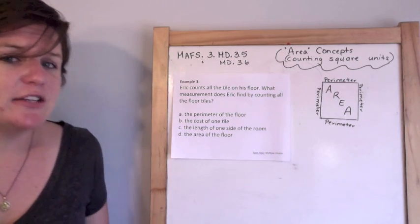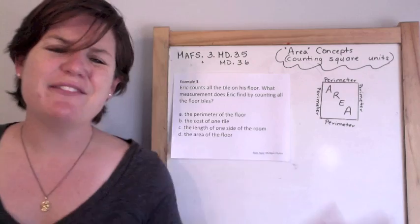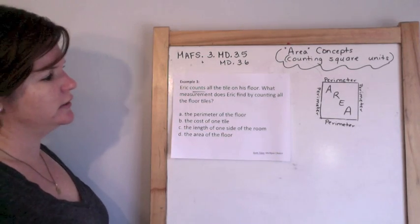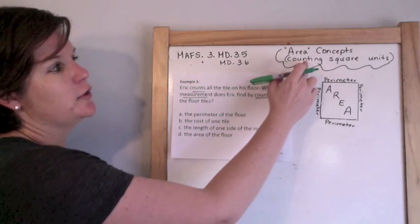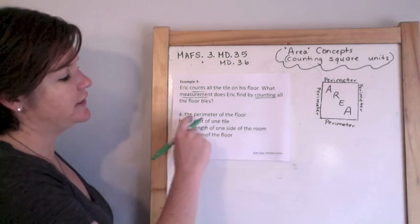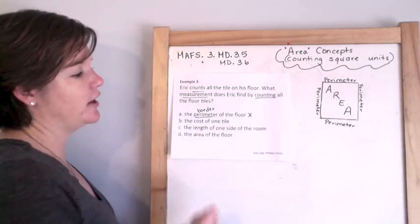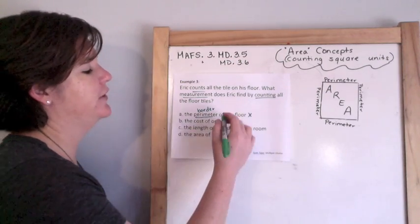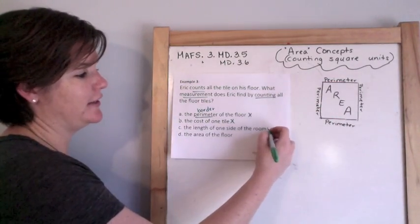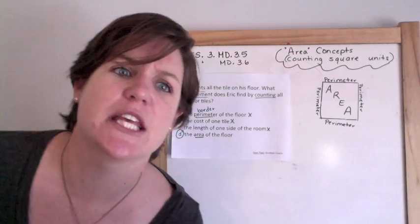Eric counts all the tiles on his floor. What measurement does Eric find by counting all the floor tiles? He's finding the area if he's counting the floor tiles. Is he finding the perimeter of the floor? No — that would just be the border. The cost of one tile? If you're counting tiles, you're not figuring out the cost. The length of one side of the room? No, that would just be one length, not the whole coverage — the whole area of the floor.